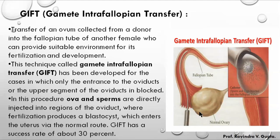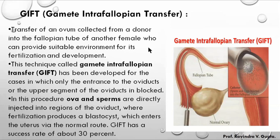In GIFT, the female provides the egg and the sperm is transferred into the fallopian tube. The technique is used when the fallopian tube is partially blocked. The gamete is transferred to the fallopian tube of another female for development. GIFT has a slightly higher success rate than ZIFT.